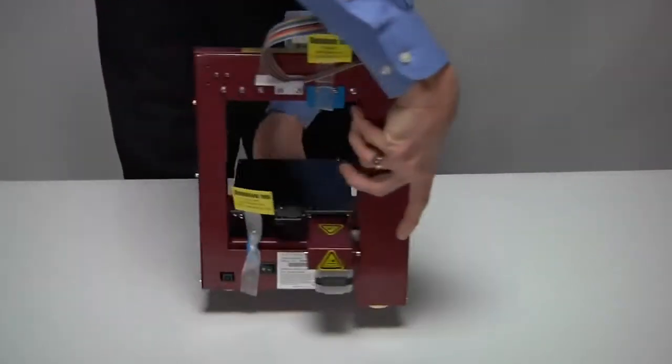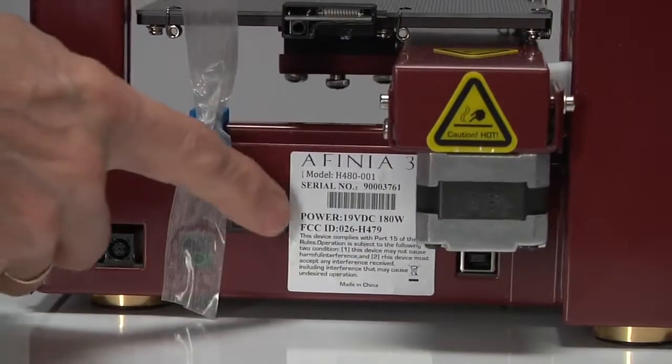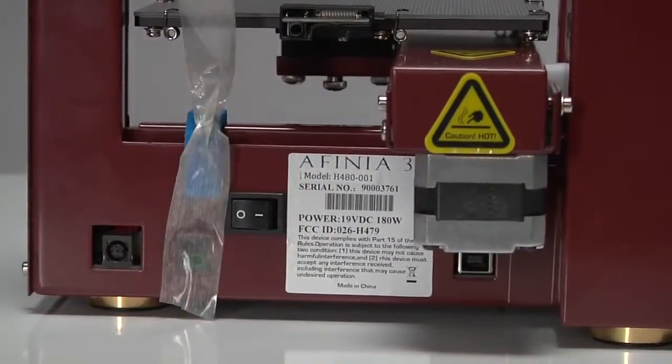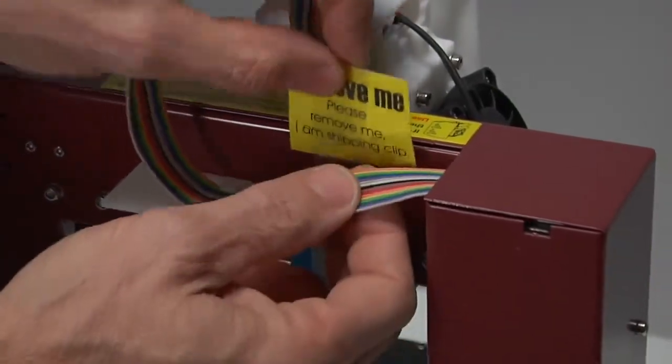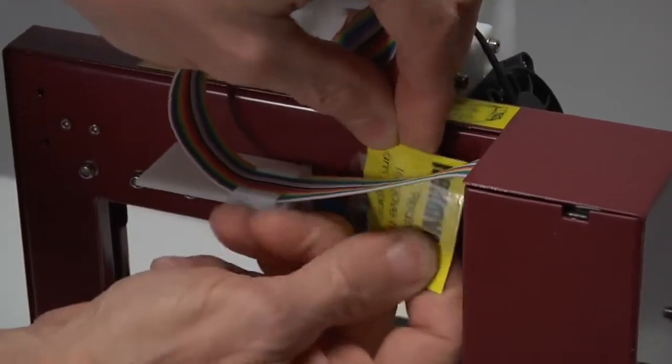Turn the printer so the back is facing you. The serial number can be found here also. There are two packaging clips that must be removed before your printer is powered on.